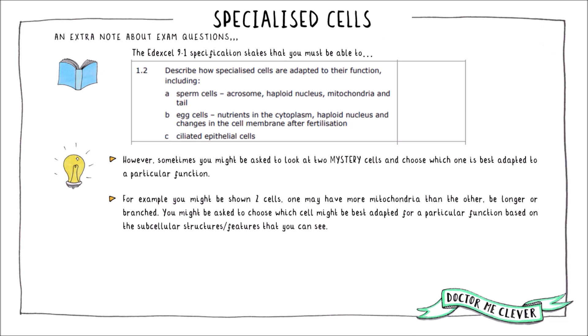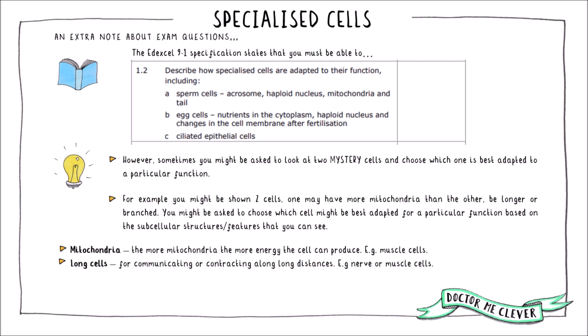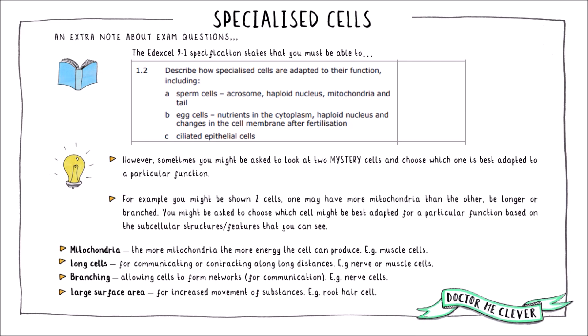Answering these types of questions really relies on applying your knowledge of subcellular structures and using common sense. If a cell has lots of mitochondria, it's likely to be a cell that needs to move or needs a lot of energy, like a muscle cell. Long cells are good for communicating or contracting across long distances, like a muscle cell or a nerve cell. Cells that branch allow networks to form and are good at communicating with other cells. And those with a large surface area are usually good at nutrient uptake, water uptake, or exchanging substances, like a root hair cell.